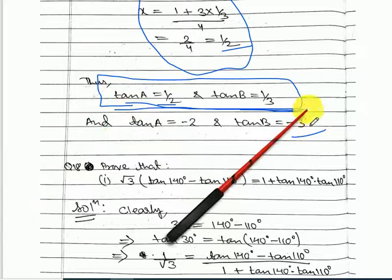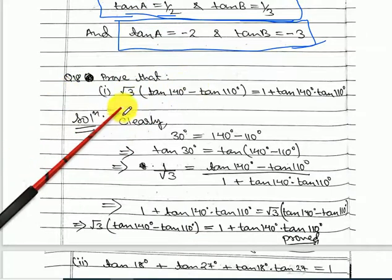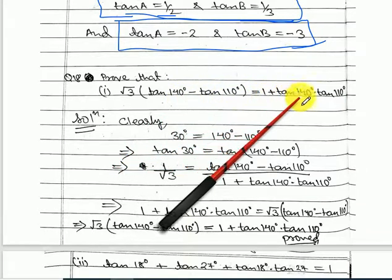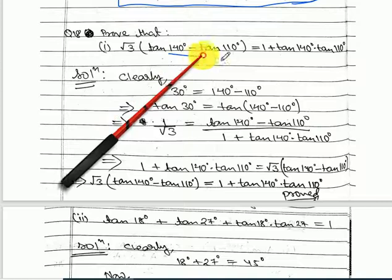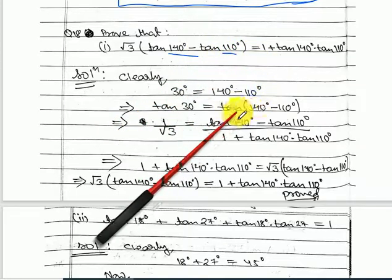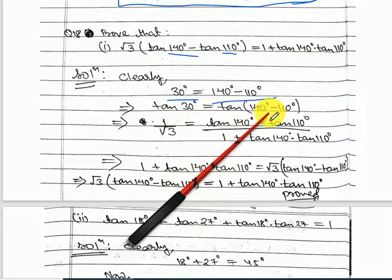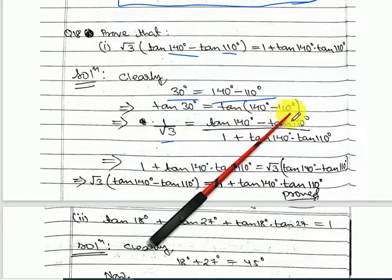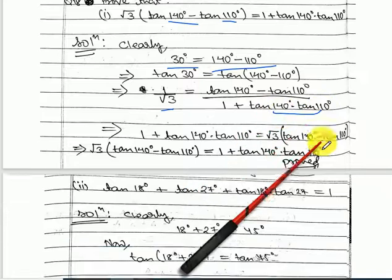Next, question number 18: prove that root 3 times (tan 140 minus tan 110) equals 1 plus tan 140 times tan 110. We can write 30 degrees equals 140 minus 110. Take tan of both sides: tan 30 equals tan(140 minus 110). tan 30 is 1 by root 3. Apply the formula for tan(A minus B), then do cross multiplication to prove it.